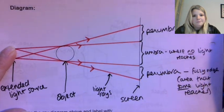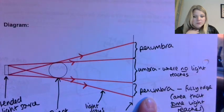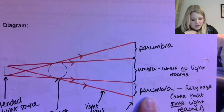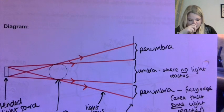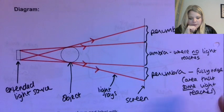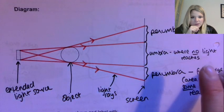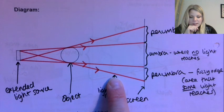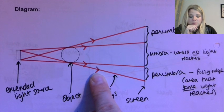So the word that we use for those is penumbra, and so it's like the fuzzy edge that you would see on a shadow and it's because some light reaches there. Same again we label everything in our diagram and straight lines for our light rays and we put arrows on them.